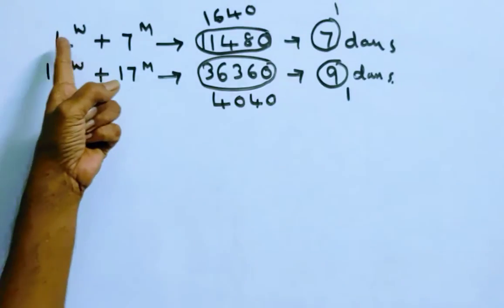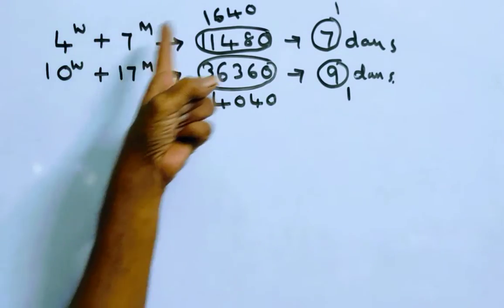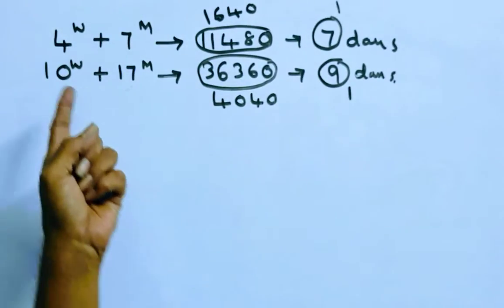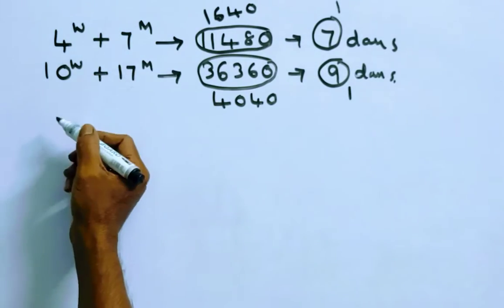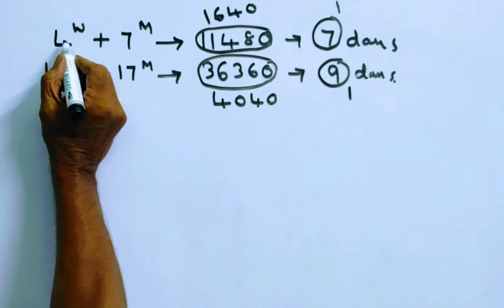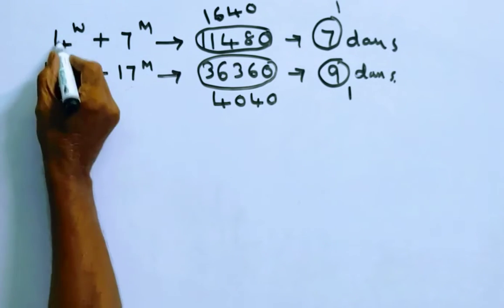Saying that four women plus seven men is equal to 1,640, and ten women plus seventeen men is equal to 4,040. Now let us solve these two equations. Let us multiply the first equation by five.